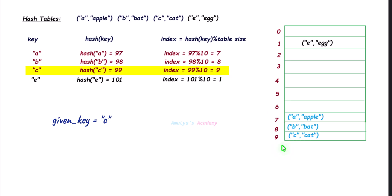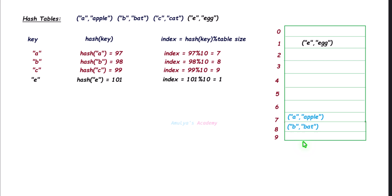Next, go to index 9 and check whether that slot is empty or not. Here it is not empty. We compare the key at that slot with the given key — both are the same, so we delete this key-value pair. This is the simple example for deletion with no collision.